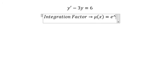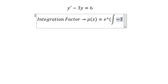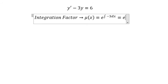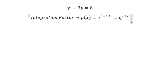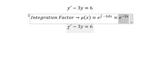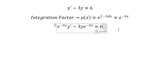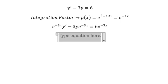to e to the power of the integral of -3dx, and we get e^(-3x). That means we need to multiply both sides with this. Later, we put the integration factor on both sides.